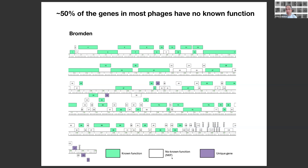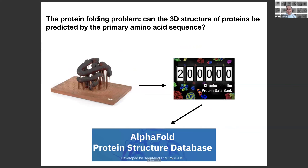I'll start by briefly introducing AlphaFold. To understand the problem behind AlphaFold, you need to revisit what's known as the protein folding problem — the question of whether the three-dimensional structure of proteins can be predicted from the primary amino acid sequence. This problem was posed when the first protein structure was solved; shown on the left is myoglobin. The approach has been to solve more and more structures, deposited in the protein databank, which now has over 200,000 structures, most determined by X-ray crystallography but many now by cryo-EM and NMR.